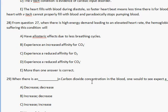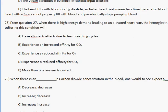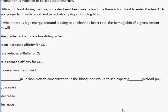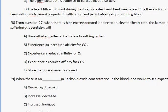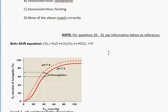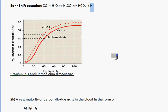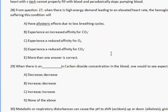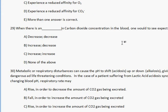From question 27: when there is high demand leading to an elevated heart rate, the hemoglobin of a given patient suffering this condition will experience a reduced affinity for O2. Because the blood is getting more acidic — pH is dropping, the protons are increasing in concentration — hemoglobin experiences a reduced affinity for oxygen.